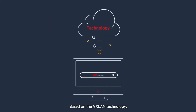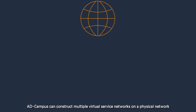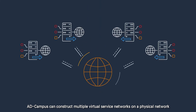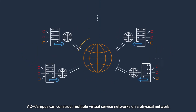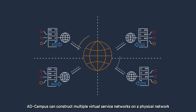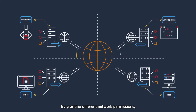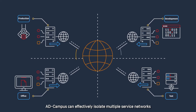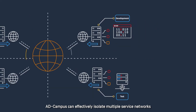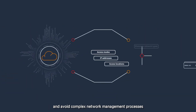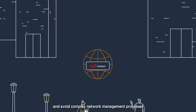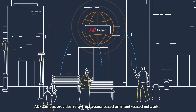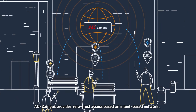Based on VXLAN technology, AD Campus can construct multiple virtual service networks on a physical network. By granting different network permissions, AD Campus can effectively isolate multiple service networks and avoid complex network management processes.